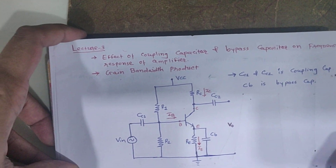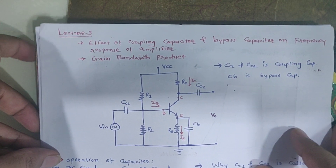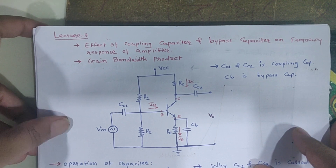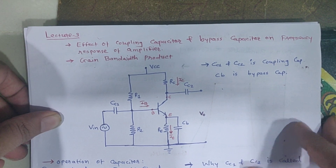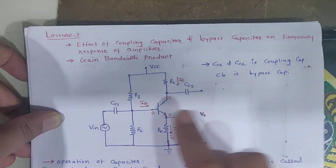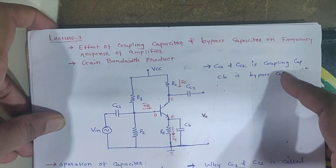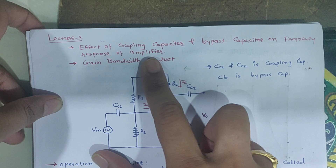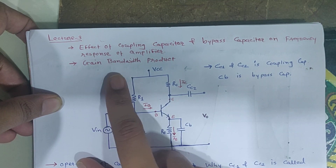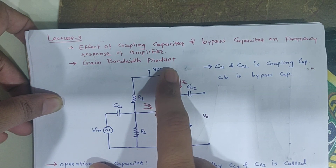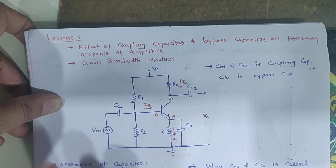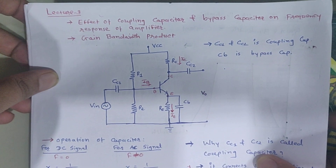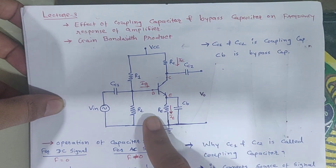Hello everyone, today we are going to start lecture number 3 of ECA subject. The topic of lecture number 3 is the effect of coupling capacitor and bypass capacitor on the frequency response of an amplifier. We will also discuss the gain bandwidth product of an amplifier.